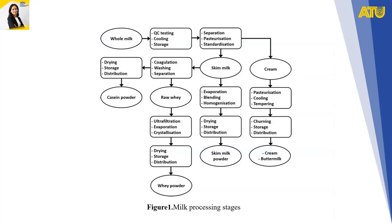Steps of milk production and dairy processing. First, raw receiving: processors receive raw milk in insulated tankers. Once the raw milk arrives at the dairy, the quality team runs tests to ensure it meets appropriate standards. Common tests include smell, temperature, and various lab tests.